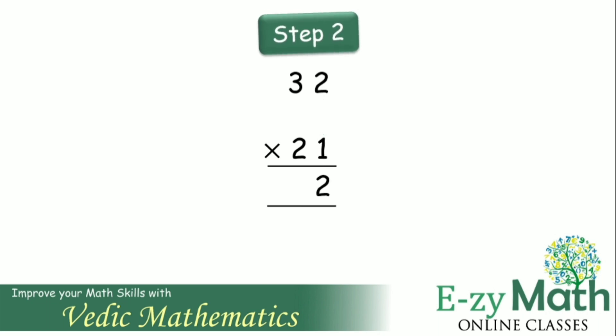Step 2: Obtaining the tens digit of the product. To obtain the tens digit, cross multiply 3 and 1 and add it to 2 into 2. Three ones are 3, two twos are 4. 3 plus 4 gives 7.